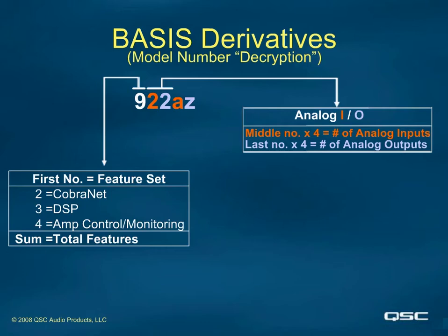The natural channel increments were then multiples of four for both inputs and outputs. A convenient outcome of this is the fact that we could keep model designations very short from zero channels up to 36 channels. For example, we could build a basis with all of the features and provide 36 inputs and 36 outputs on one device. In the beginning, when we were first developing the basis family of products, we mapped out over 70 different models.